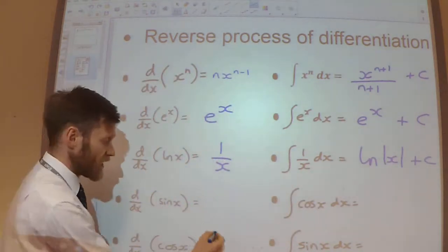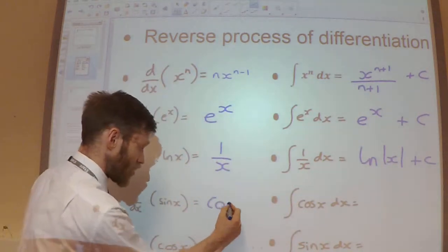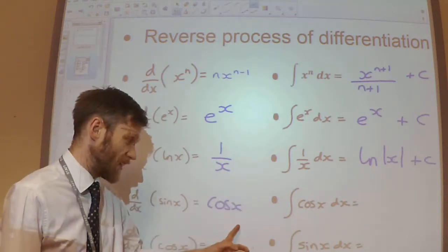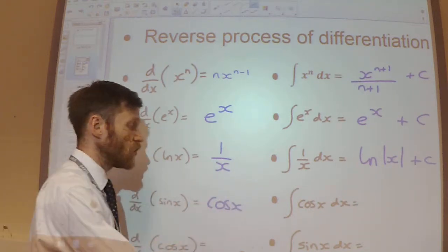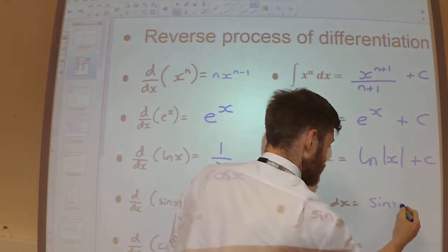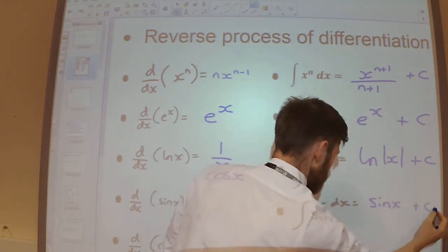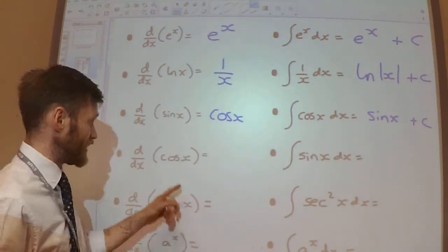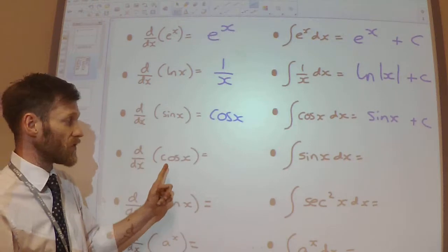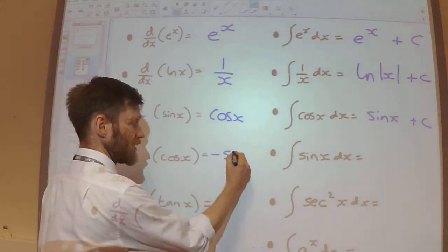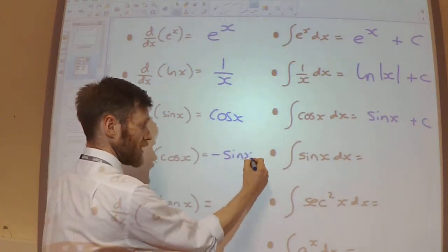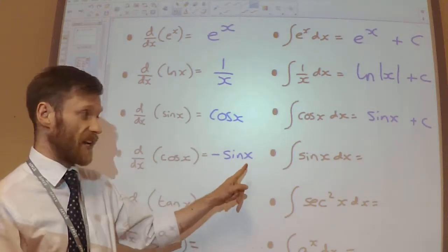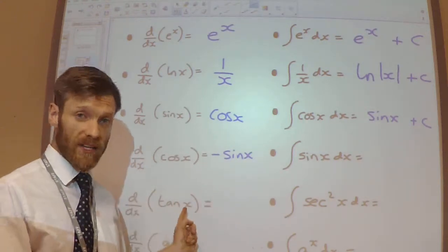When we differentiate sin, we get cos, which means that when we integrate cos, we should get sin. We have seen that when we differentiate cos, we get minus sin, which means that if we were to integrate sin, we should get minus cos.